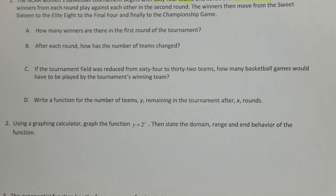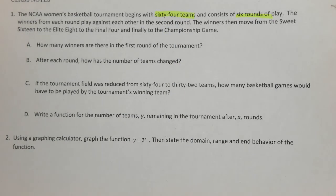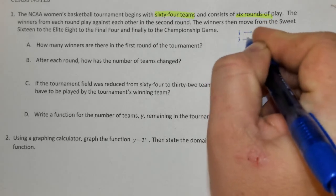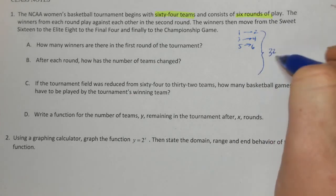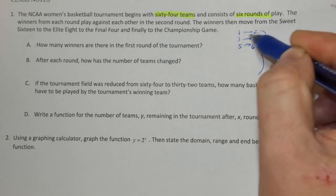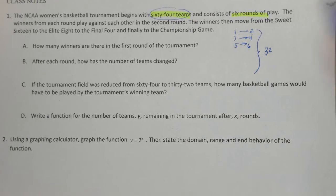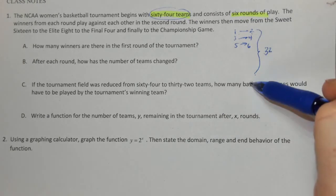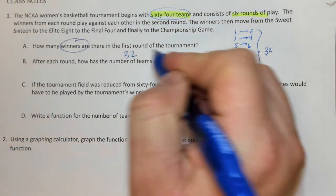How many winners are there in the first round? Every one of the 64 teams is going to be matched up against another team. So there will be Team 1 plays Team 2, Team 3 plays Team 4, 5 plays 6, and there's going to be a total of 32 games. Each game consists of 2 teams for a total of 64 teams. So if there are 32 games and each game can only consist of 1 winner, there would be 32 winners in the first round.